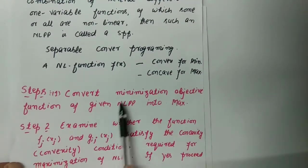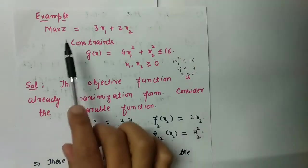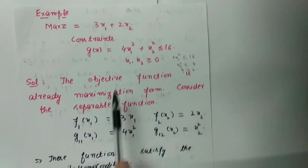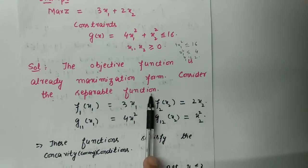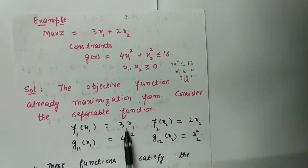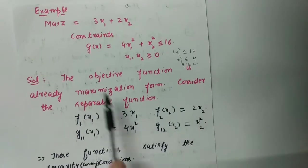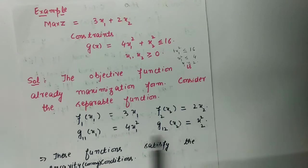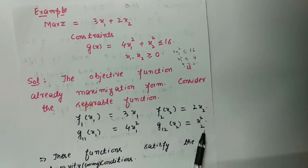Step 1: Convert the objective function of the given nonlinear programming problem to maximization type. Here the objective function is already of maximization type. We now consider the separable functions: f₁(x₁) = 3x₁, f₂(x₂) = 2x₂, g₁₁(x₁) = 4x₁², and g₁₂(x₂) = x₂².